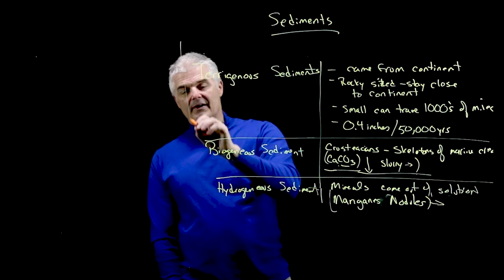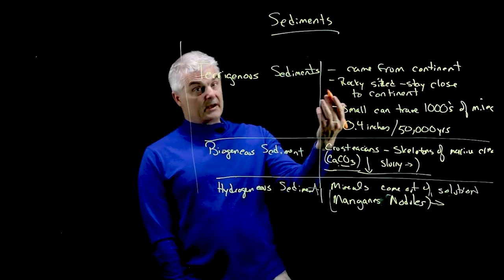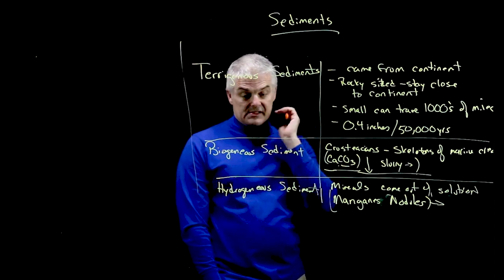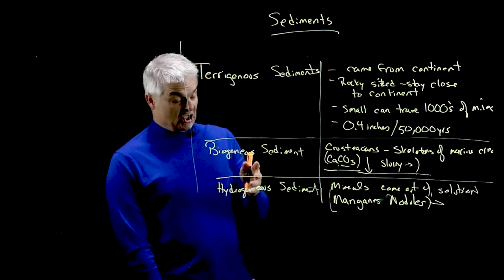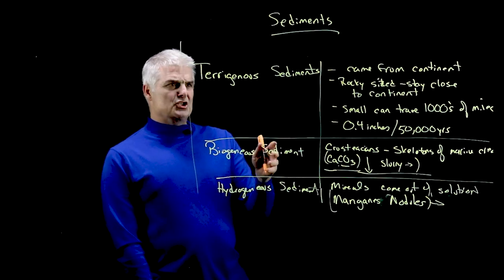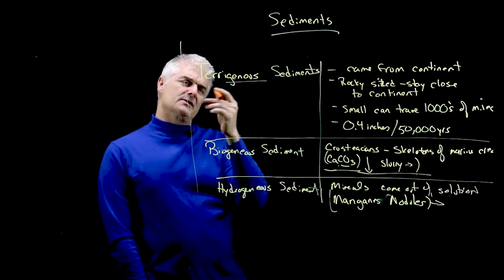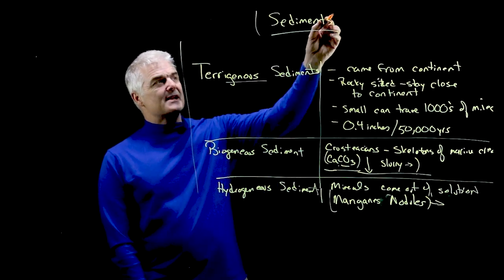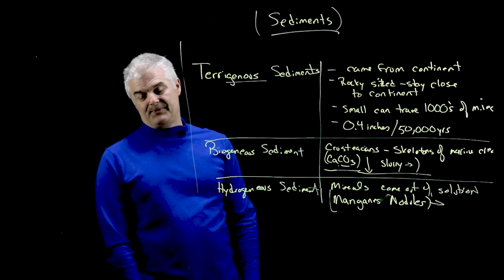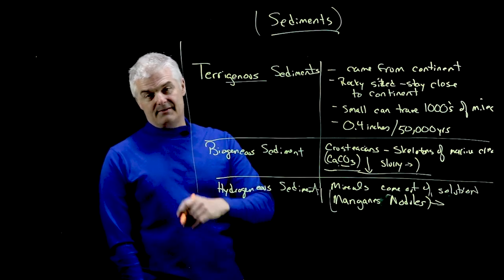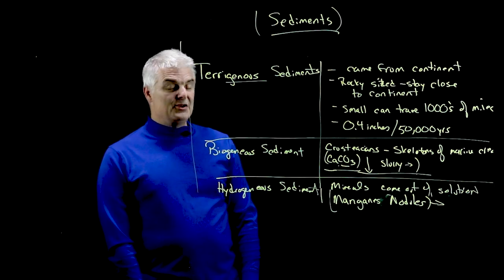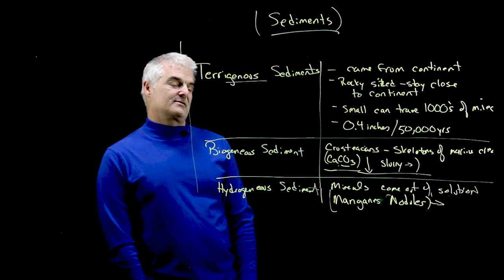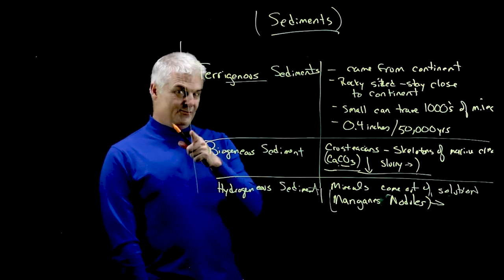So we find sediments on the bottom of the ocean in three kinds: the terrigenous, the biogenous, and the hydrogenous. Most of them are not economically important, but manganese nodules are. So now it's a question of how do we find and access these cool things? Sediments on the bottom of the ocean. Houston — no problems, because you're as sharp as tacks. We'll see you in class.